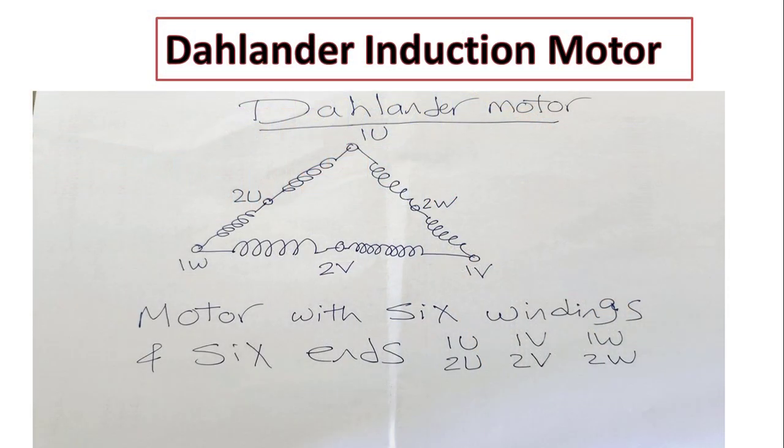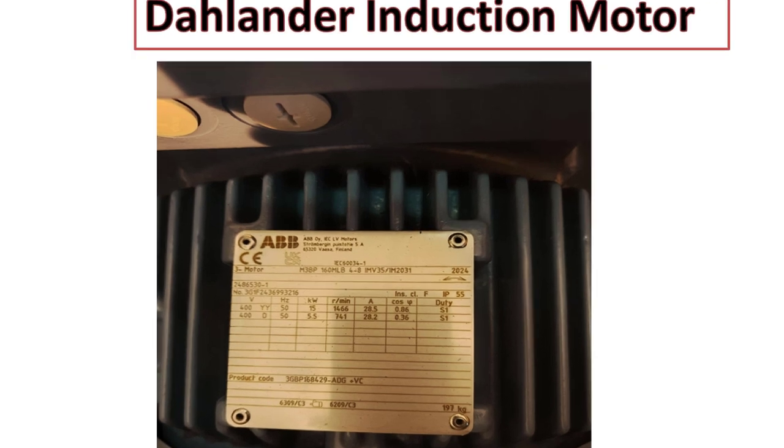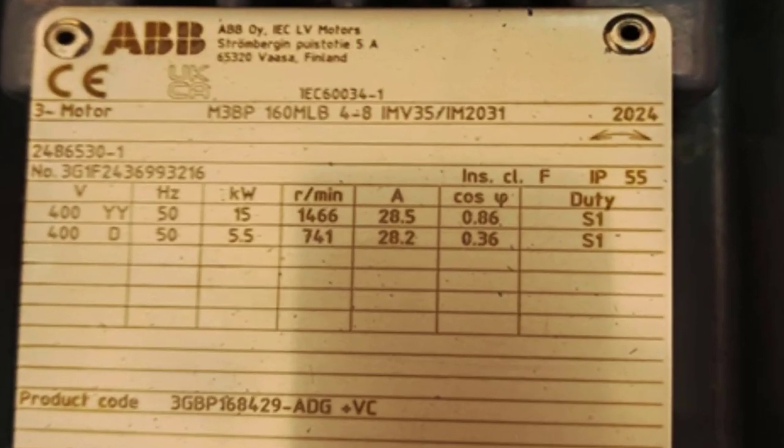Here in this special three-phase induction motor, as you can see, we have six windings with six different ends: 1U, 1V, 1W, 2U, 2V, 2W. In this motor nameplate you will find that this motor could have two different speeds. First speed is 1466 RPM in case of star-star connection, and the second speed is 741 RPM in case of delta connection.